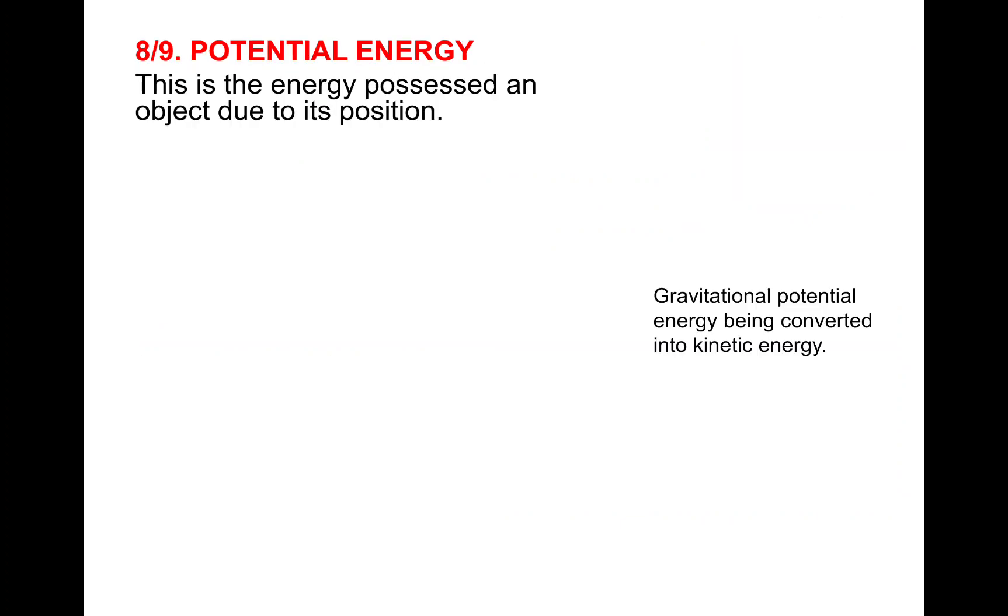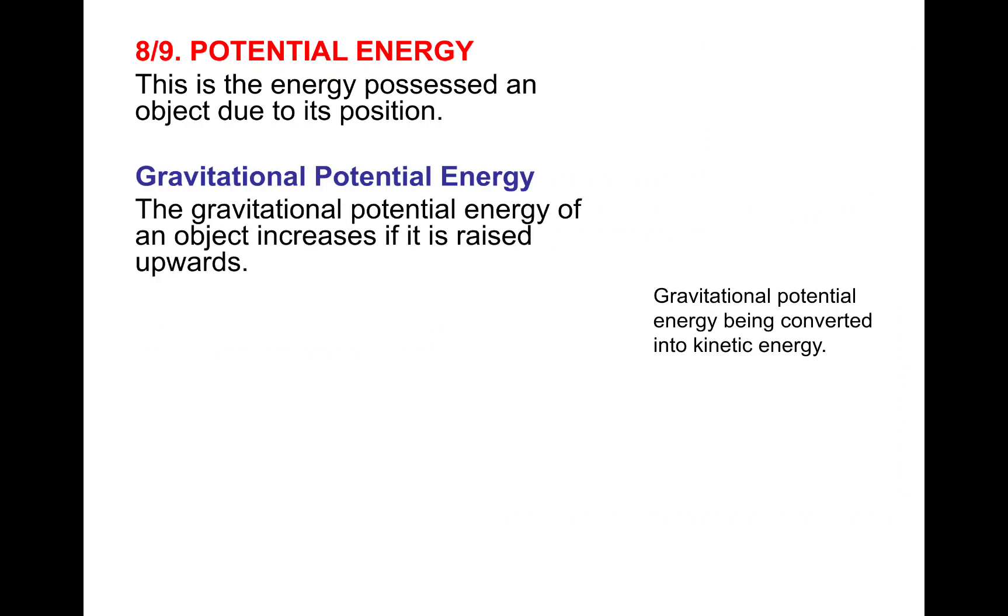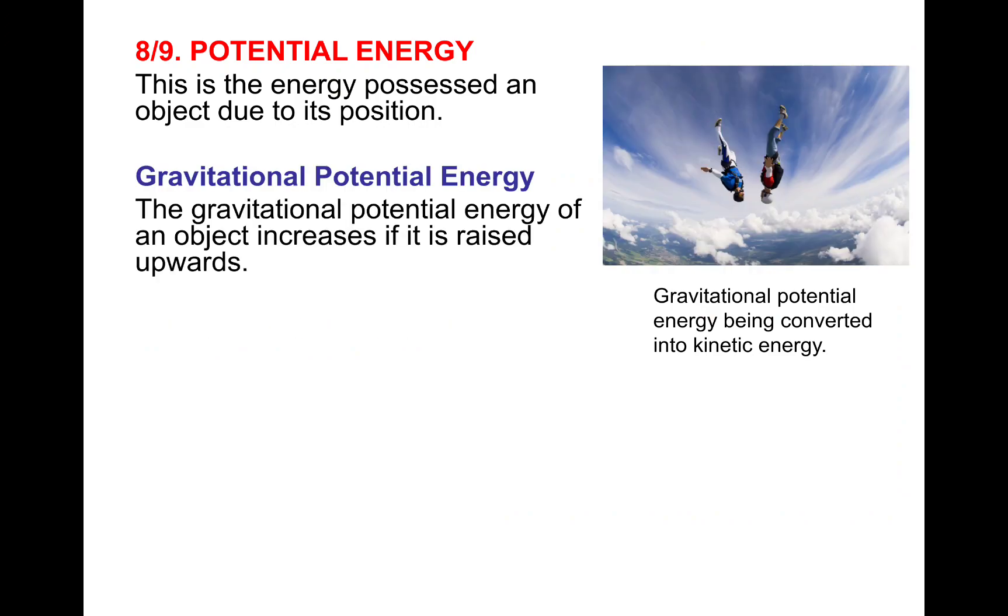So eight and nine. Oh, I broke my PowerPoint there. So potential energy. This is the energy possessed by an object due to its position. Gravitational potential energy. The gravitational potential energy of an object increases if it's raised upwards. So if you jumped out of a plane, you would have gained gravitational potential energy as you were lifted into the sky. And as you jumped down, the gravitational potential energy will be converted into kinetic energy. You'd also get some thermal energy and some sound energy as well.